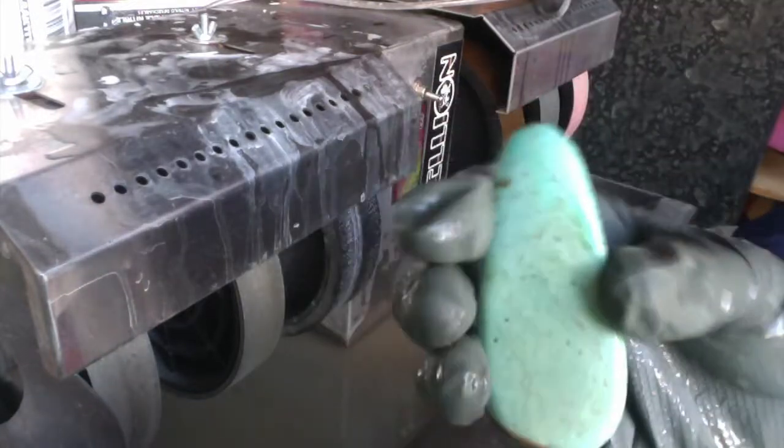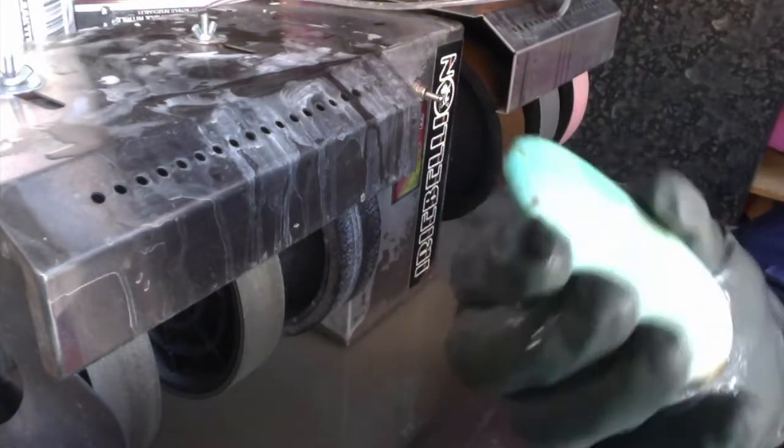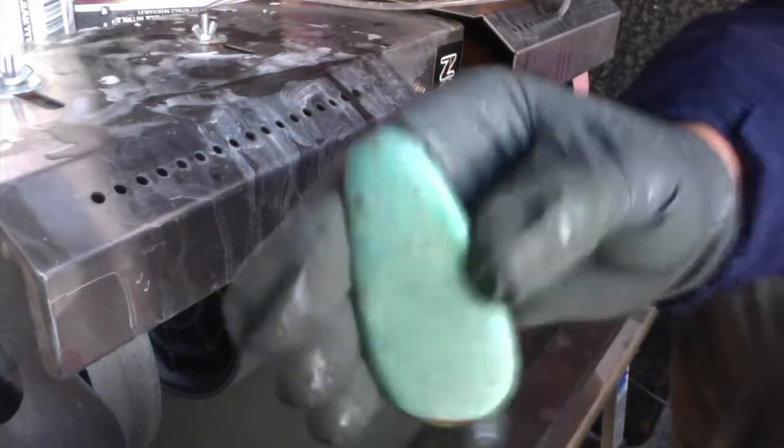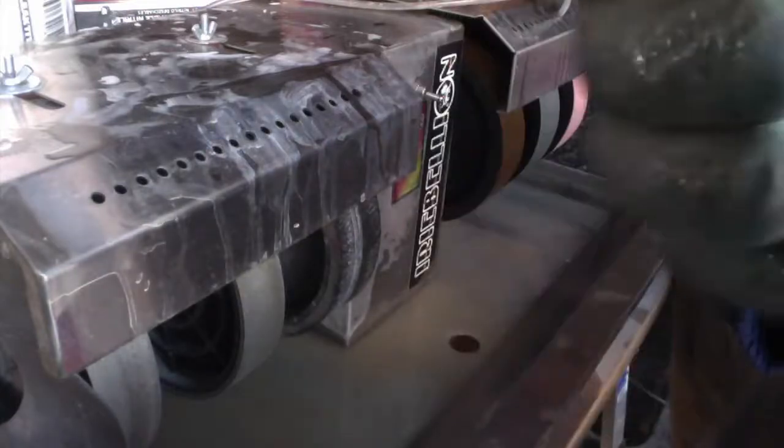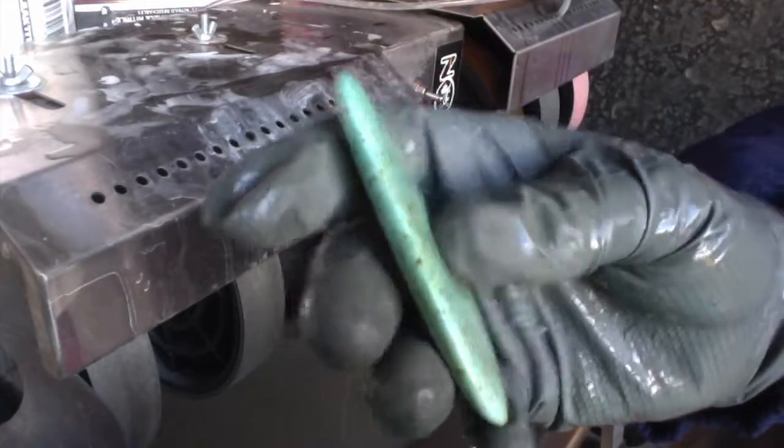This stone reminds me a lot of African turquoise, although I would almost guarantee that this is not African turquoise. Anyone who knows African turquoise knows that it's a jasper. Anyway, on to the 1200.